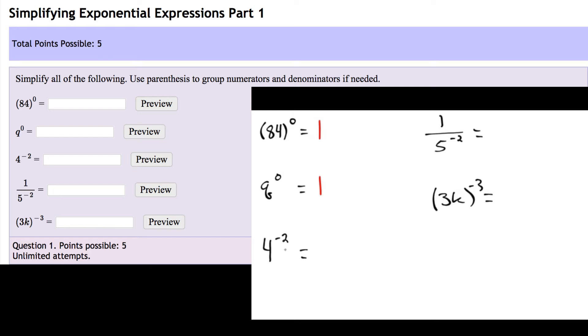This next example, 4 to the power of negative 2, we don't like negative exponents when we're simplifying, so we're going to put that down below and make the exponent positive. And then 4 squared is just 4 times 4, which is 16, so 1 over 16 will be our answer for that one.